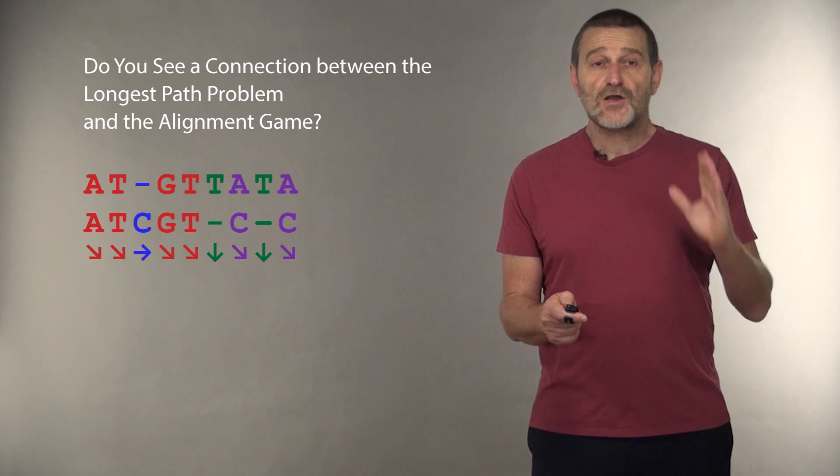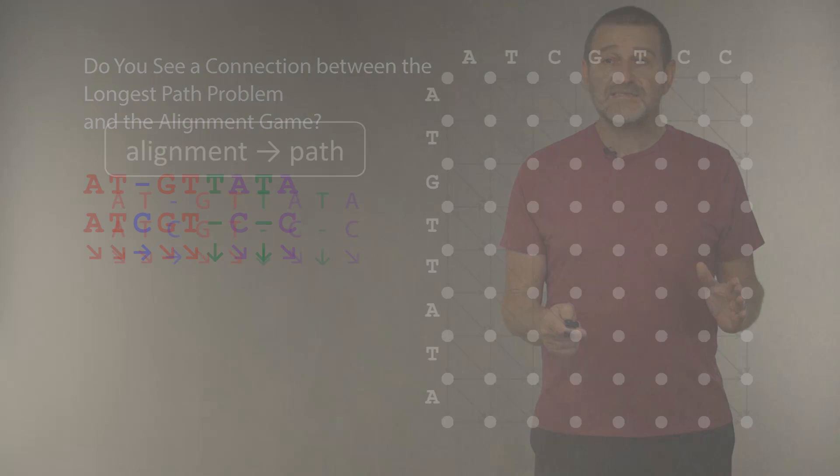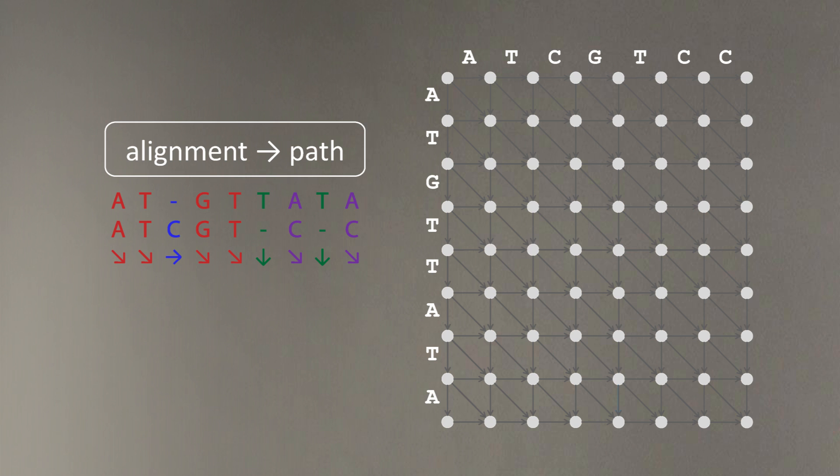Let's, for every column of the alignment matrix, let's code it with an arrow, as I showed in this slide. And then, after we design this arrow, let's see how this arrow would translate into the new grid that I have constructed and presented in this slide. The first arrow is diagonal, let's move diagonally in our grid. The next arrow is also diagonal, let's move diagonally again.